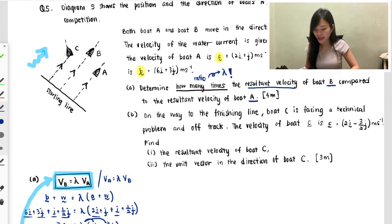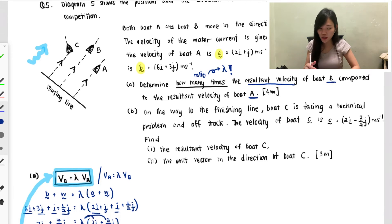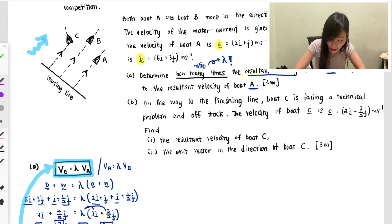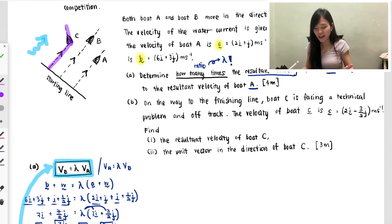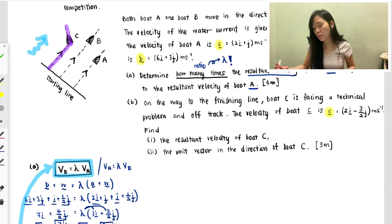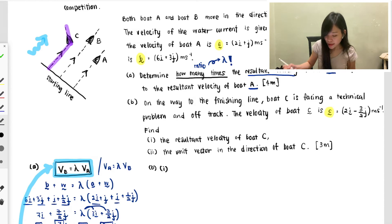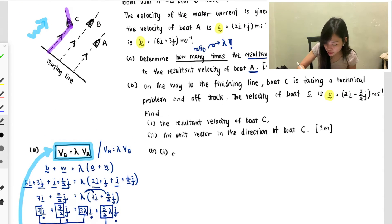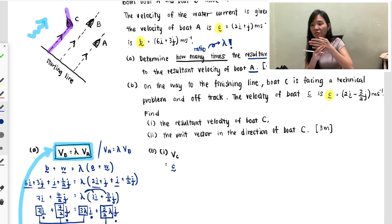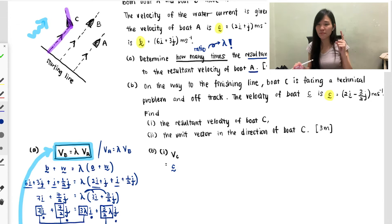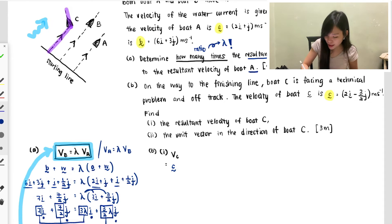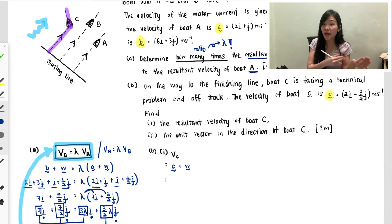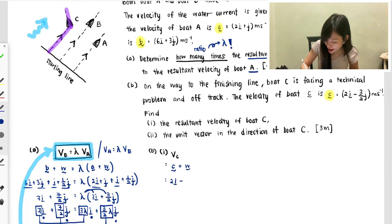Moving on to part (b): on the way to the finishing line, boat C faces a technical problem and goes off track. You can see in the diagram — the purple color — that boat C suddenly veers off track. The velocity for boat C is given. Part (b)(i) asks for the resultant velocity for boat C. Again, even if off track, there's still water current, so your resultant velocity for boat C = boat C's original speed + water current speed.